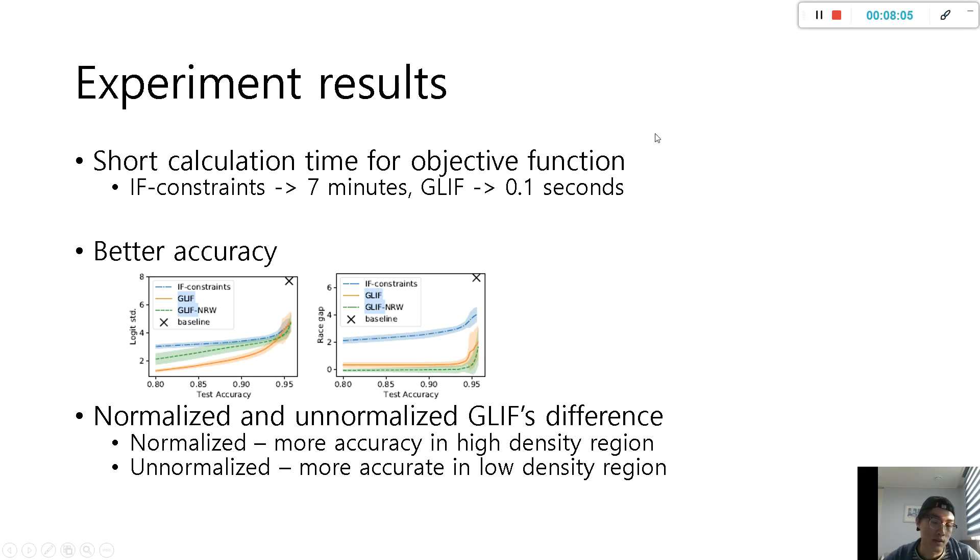In this graph, the blue line is IF-constraints and the red line is GLIF. Lastly, the difference between normalized and unnormalized GLIF is that unnormalized GLIF has more similar outputs in the high-density region, so normalized GLIF is more suitable for cases where small sets are also important.